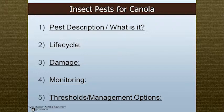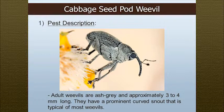The first pest of canola is the cabbage seed pod weevil. These guys are small weevils, three to four millimeters long, covered with small little hairs. They're gray in color, and typical of most weevils, they have a curved snout and elbowed antennae.